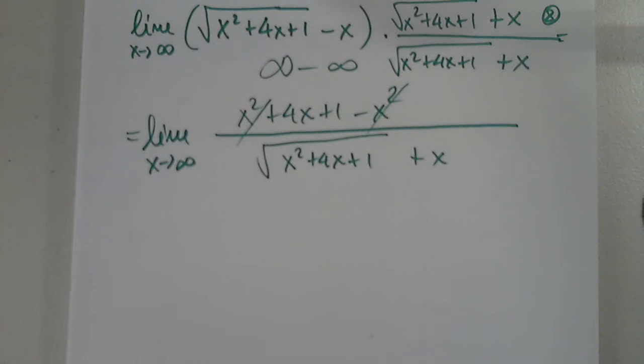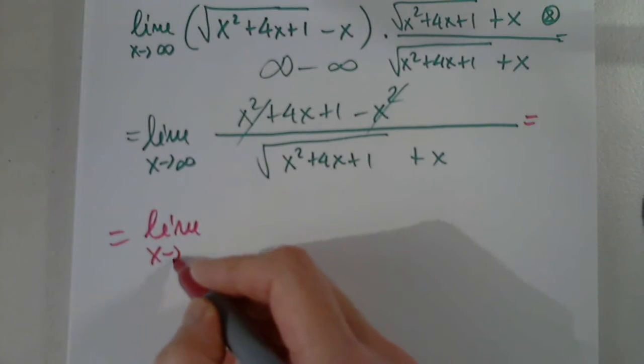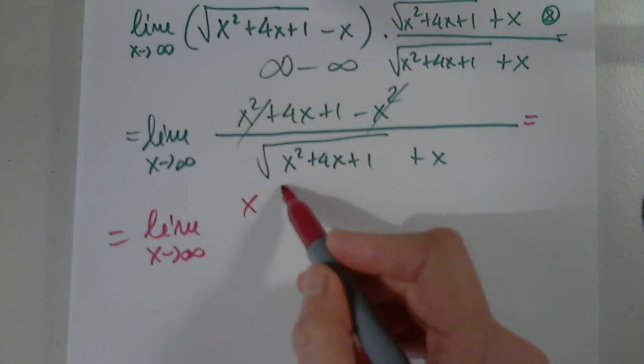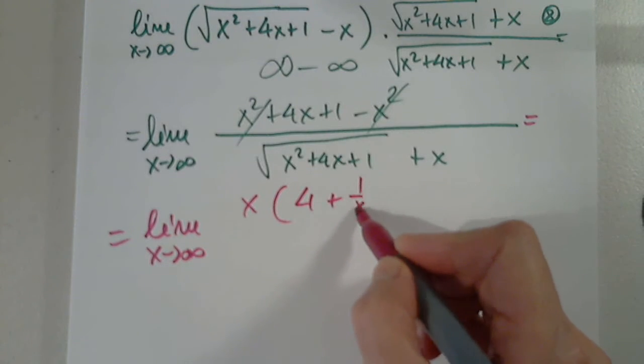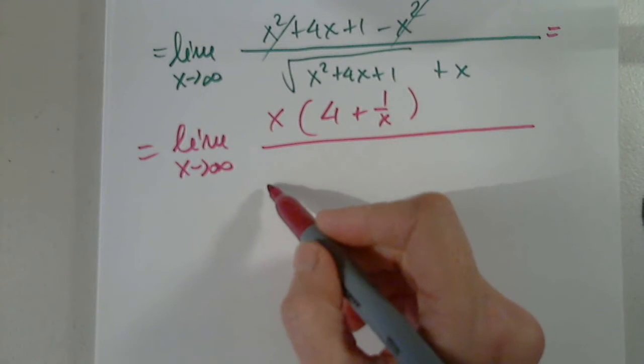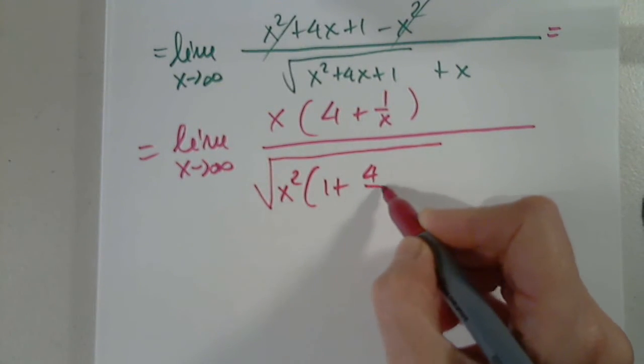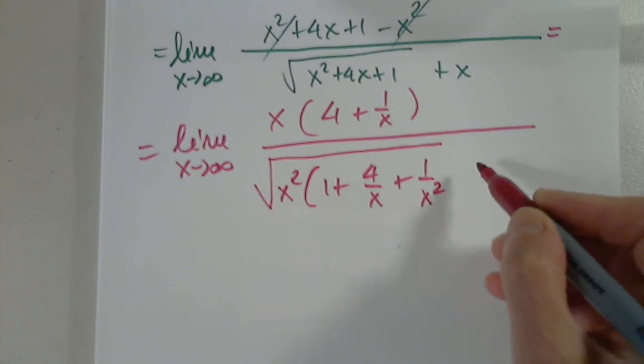Then I realized that the numerator is a linear function and I will factor out X. And I get 4 plus 1 over X. And in the denominator, I will factor out under the square root, I will factor out X squared. And I get 1 plus 4 over X plus 1 over X squared.